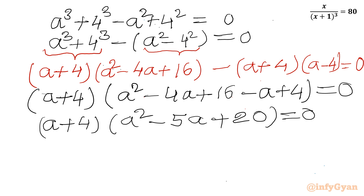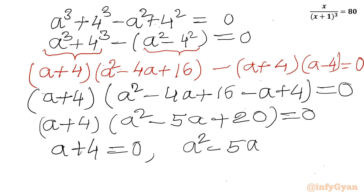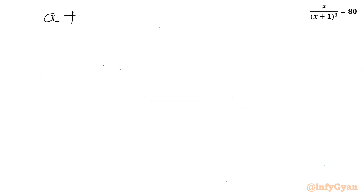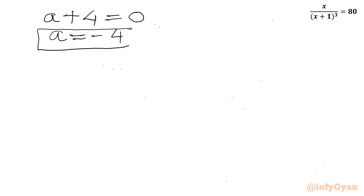So the conclusion is either a plus 4 equal to 0, or the quadratic a squared minus 5a plus 20 equal to 0. Let us solve both equations. From a plus 4 equal to 0, we get a equal to negative 4.